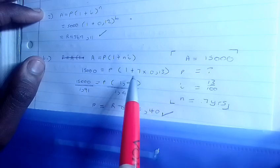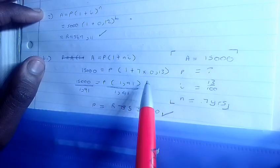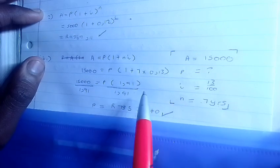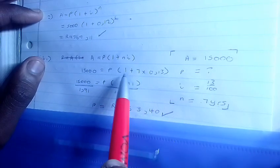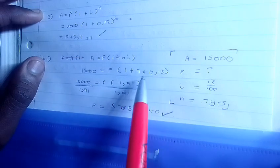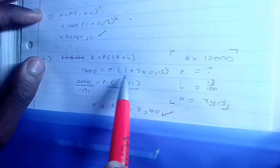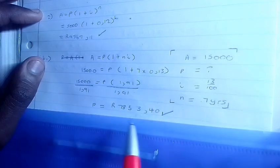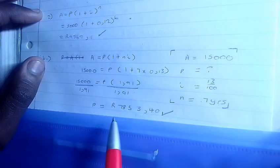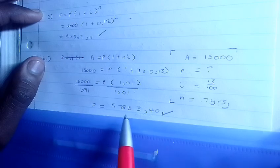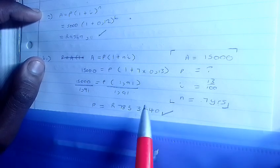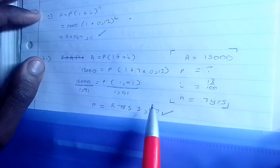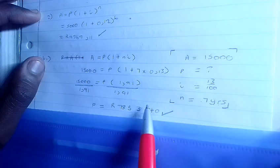This is simple interest formula. We get our final answer here - we divide to get our value of P. Our value of P is 7853.40. That's how much Mark originally invested in terms of simple interest.